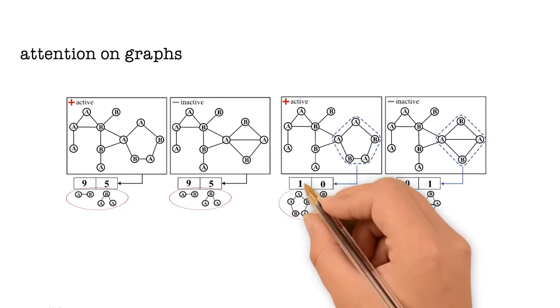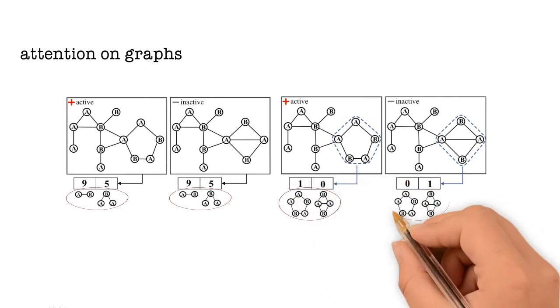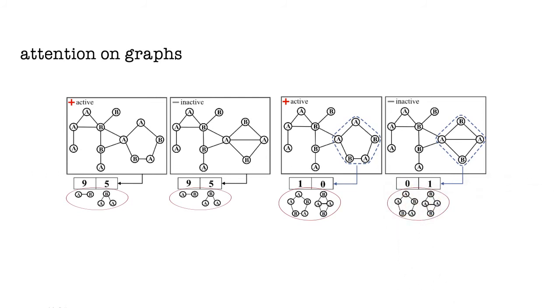On the other hand, if we use attention to focus only on the task-relevant parts of the graph, we can identify patterns that can help in distinguishing between positive and negative graphs.